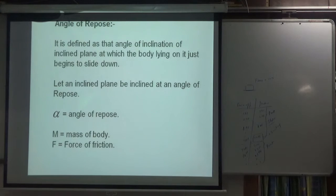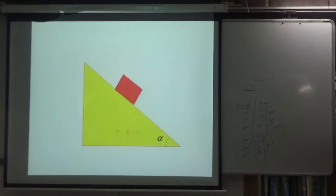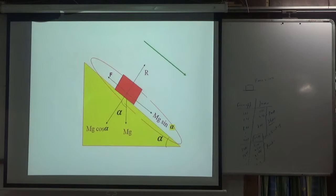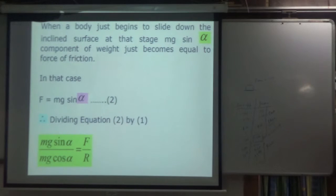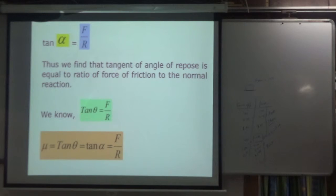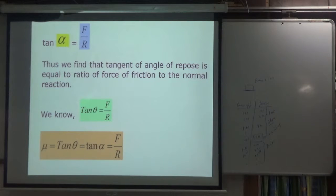The angle of repose is defined as the angle of inclination of an inclined plane at which a body lying on it just begins to slide down without any acceleration. For a body on the inclined plane, the components are mg sin α (along the plane) and mg cos α (normal). Setting up equations: normal reaction R = mg cos α (equation 1) and F = mg sin α (equation 2). Dividing: tan α = F/R = μ, so μ = tan α, which equals tan θ — the angle of repose equals the angle of friction.